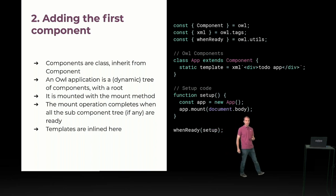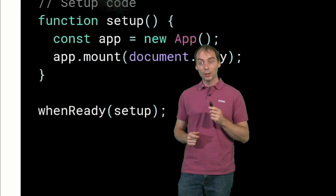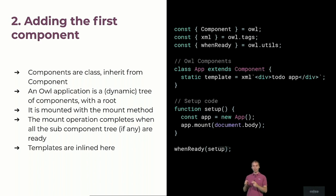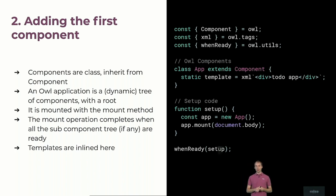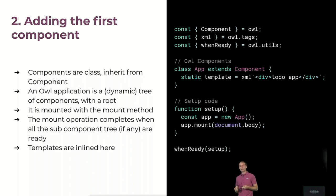One thing I should mention is that in this talk, I use the XML helper to define the template. This helper lets me define inline templates easily and will register them to the OWL rendering engine. It's really helpful for such a talk and for documentation. But in a real application, you will probably not want to use such a helper, because inline templates defined like that cannot be translated, cannot be XPathed, extended, and so on. For most use cases, I don't expect your template to be inline — but for this talk, that's what we are going to do.